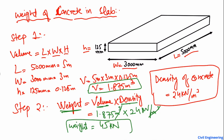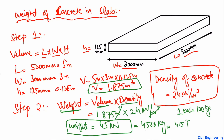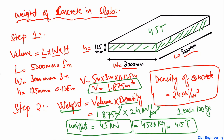If we convert into kilograms, it will be 4,500 kilograms, because one kilonewton is approximately 100 kg. If we convert into tons, it will be equal to 4.5 tons of concrete. So 4,500 kilograms or 4.5 tons of concrete is the weight in this slab with dimensions of 125 mm height, 3,000 mm width, and 5 meters length.